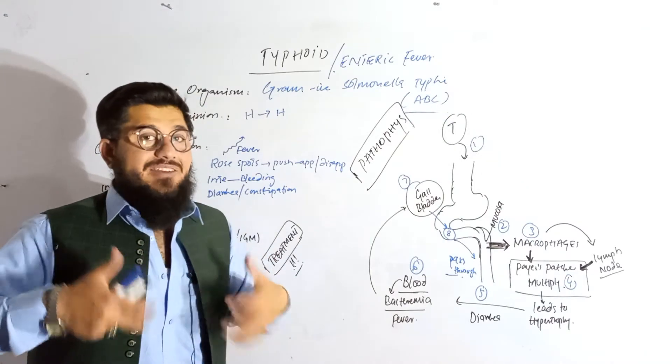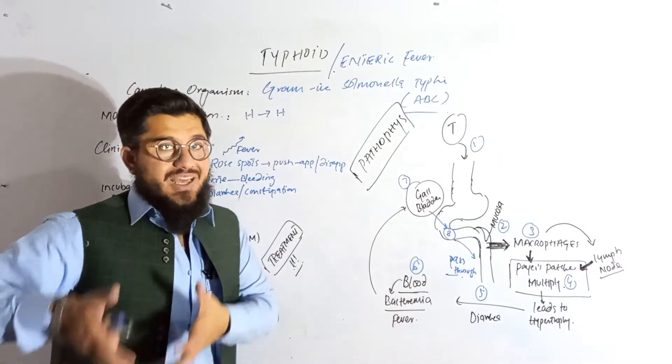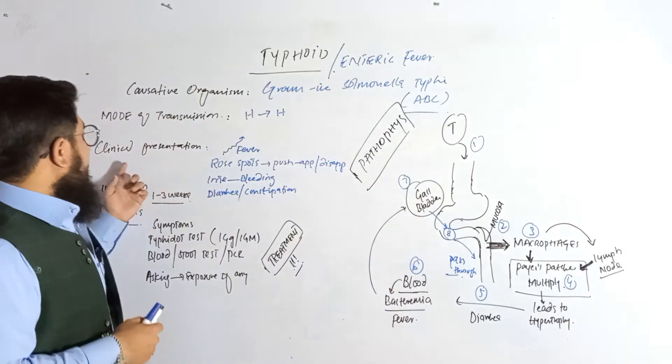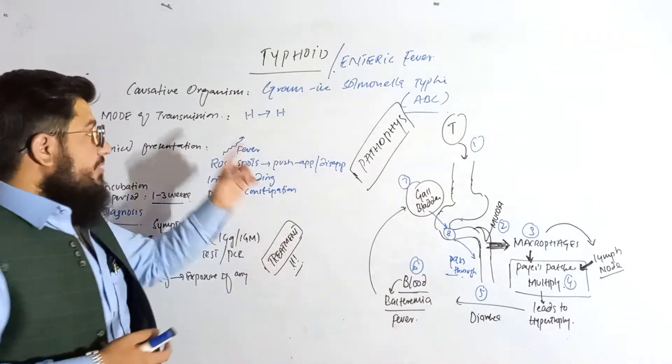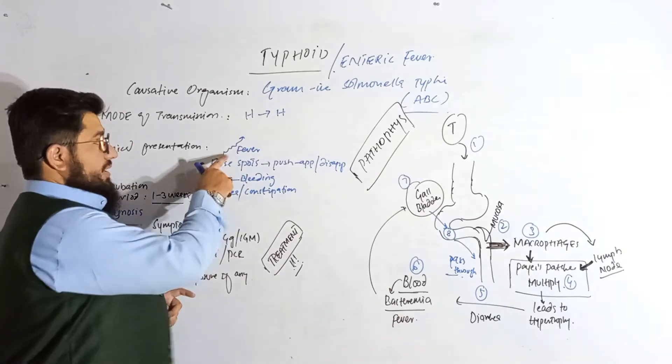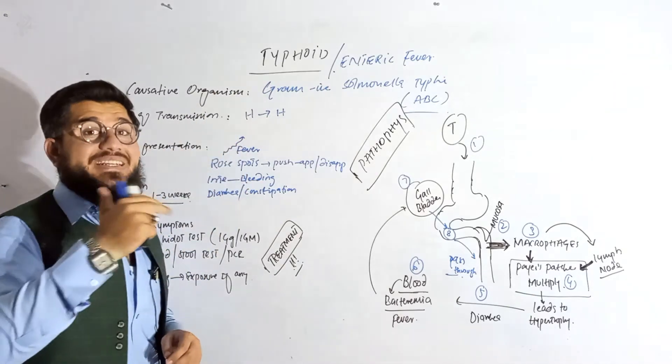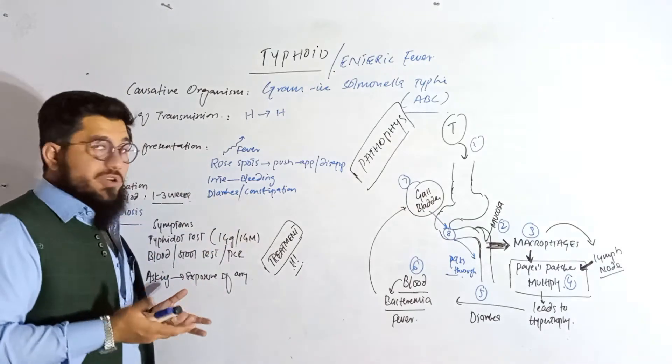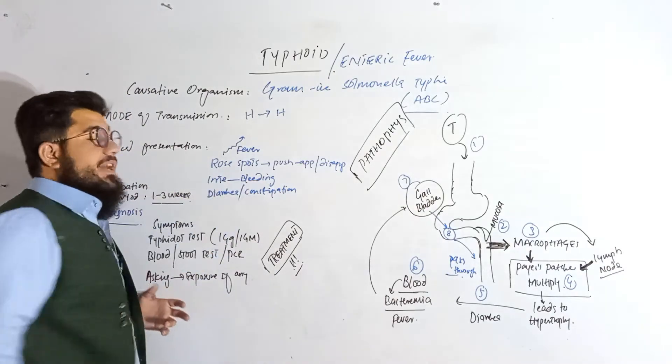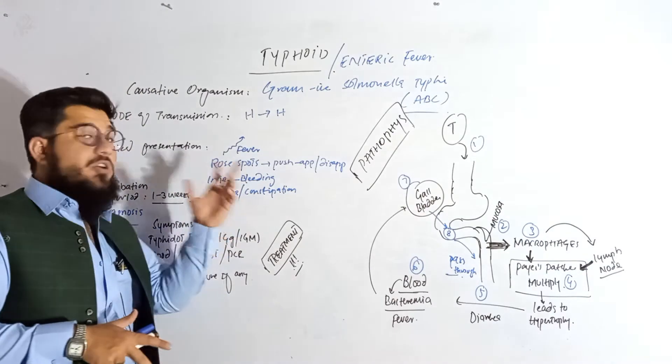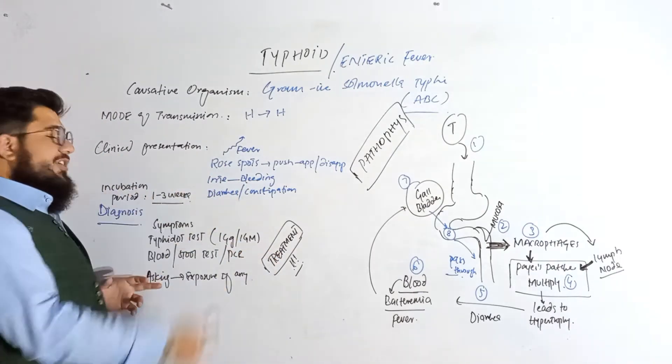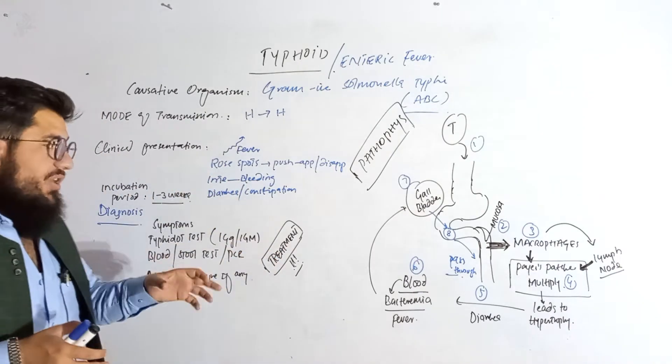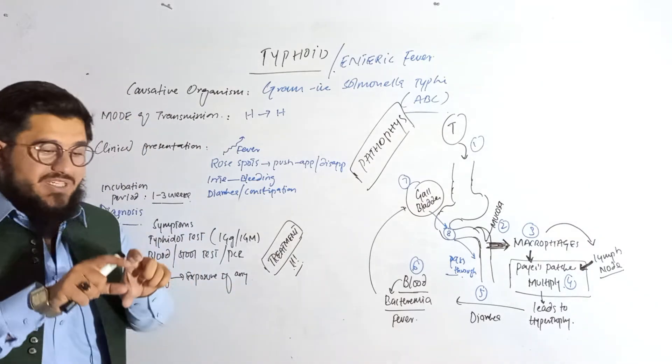What is the clinical presentation? Very simple: abdominal pain, fever that will be gradually increasing. One step later, the fever, there will be rose spots seen, and there might be bleeding, diarrhea and constipation, and several signs and symptoms can be seen. Incubation period is from one to three weeks. This incubation period may vary, may change.